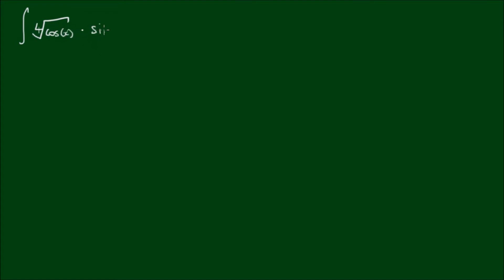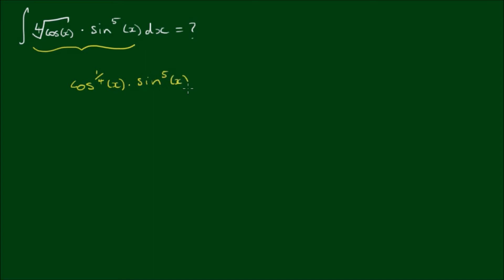Let's have a go at solving the integral of the fourth root of cosine of x by sine to the fifth power of x with respect to x. This looks like quite a funky integral, so let's rearrange it to something a little bit more familiar. This integrand I can rewrite as cosine to the one-quarter power of x by sine to the fifth power of x. Already it looks a little bit more familiar because we've got a power of cosine by the power of sine.